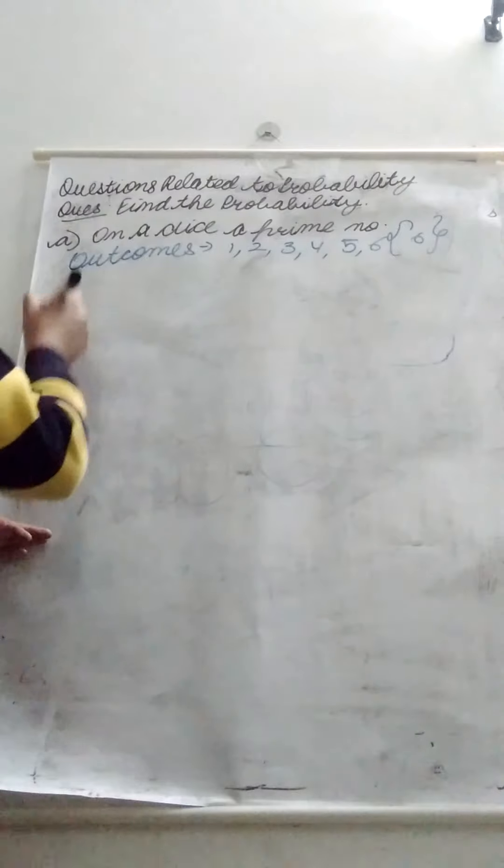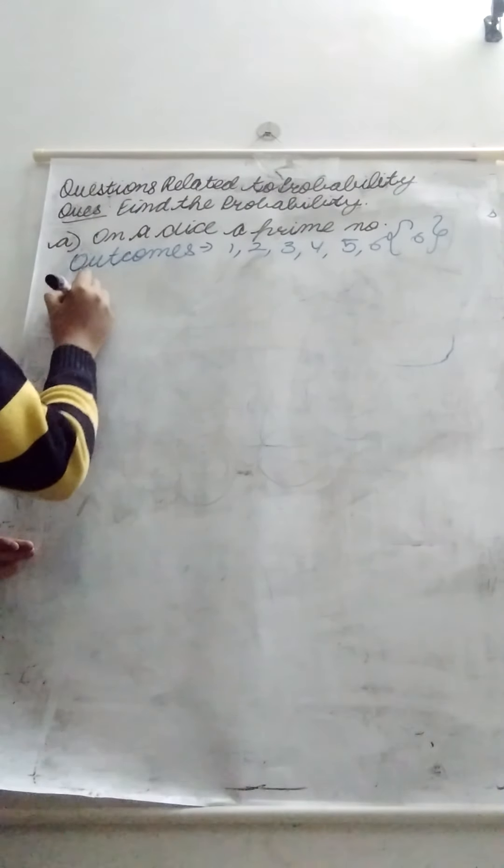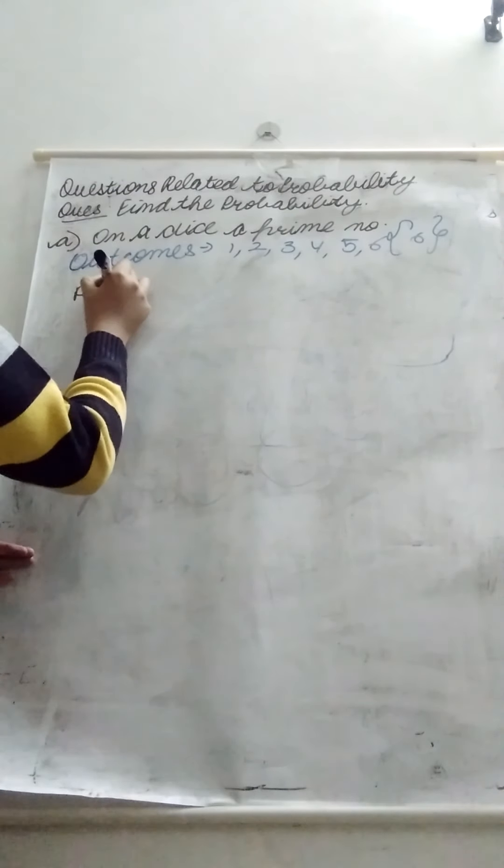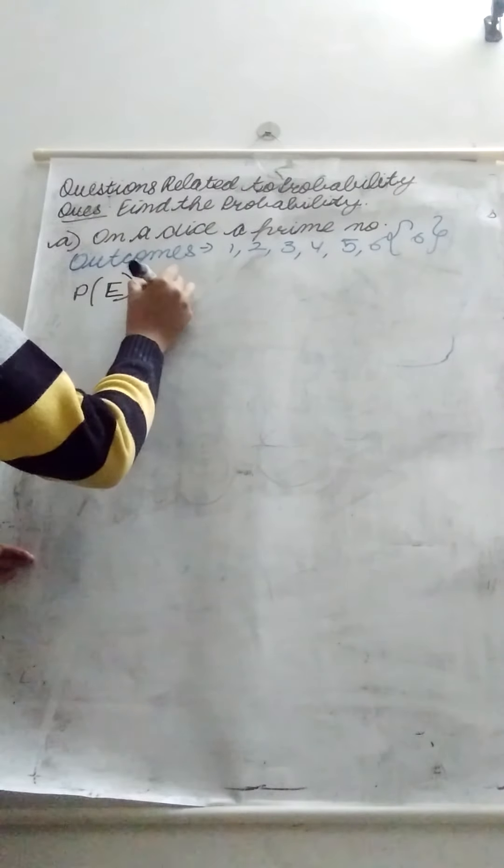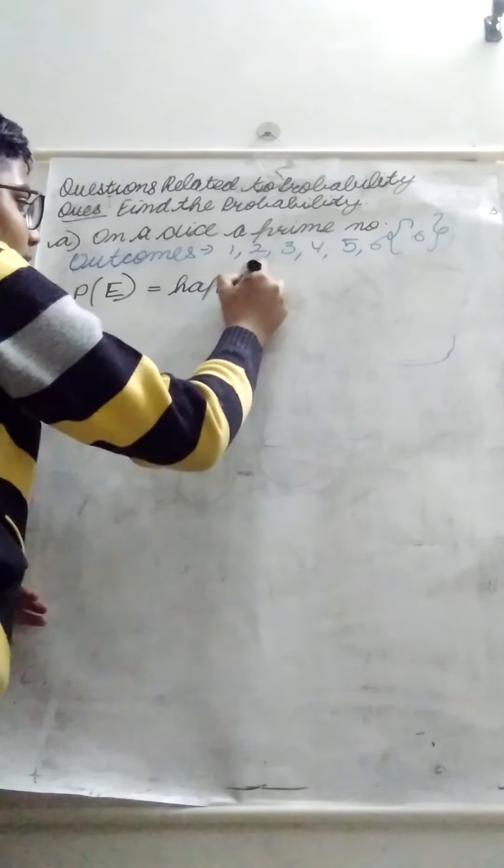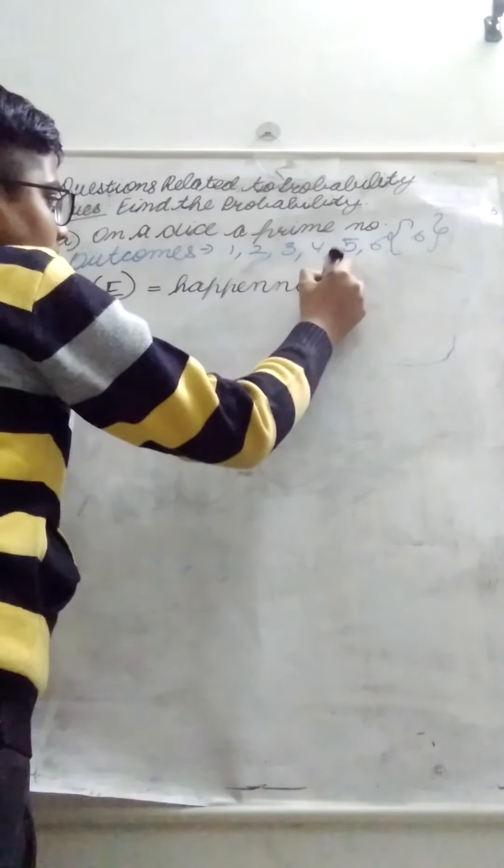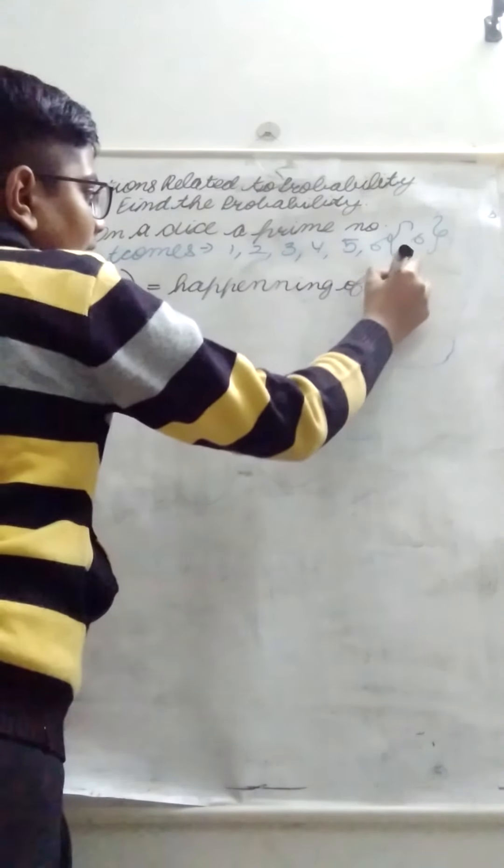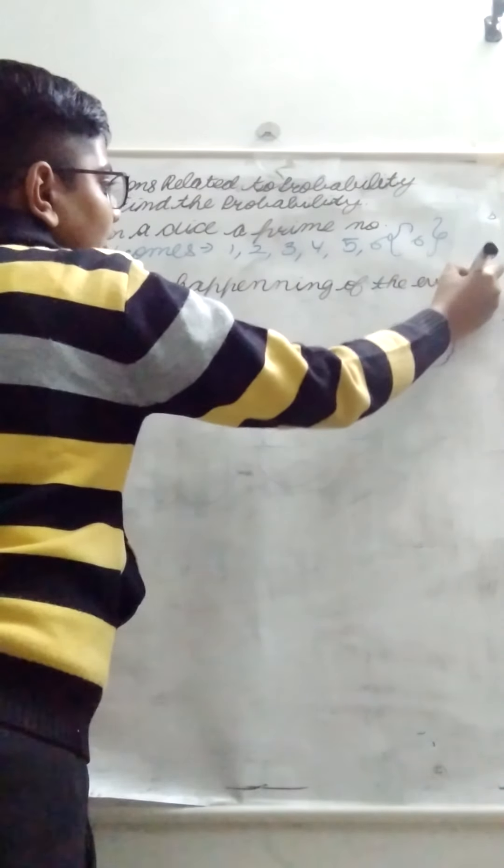Next step is to write the formula. What is the formula? It has a proper method. We write P, then bracket mein we write E. Then equals to formula. What is the formula? Happening of the event.